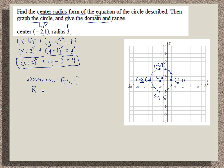And then my range. For the range, you want to read the graph from the bottom to the top. The lowest point on the graph has a y value of negative 2. For the range, you're looking at the y values.